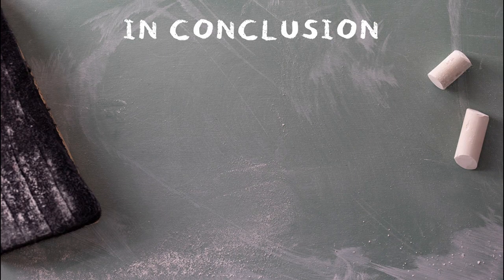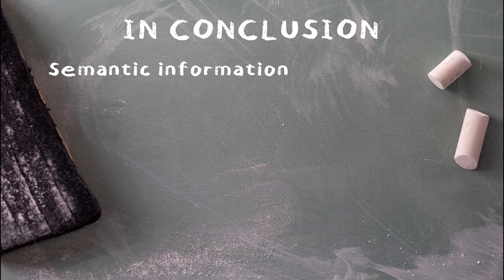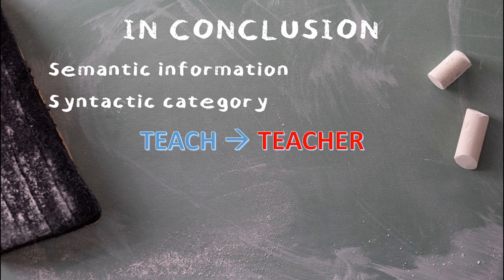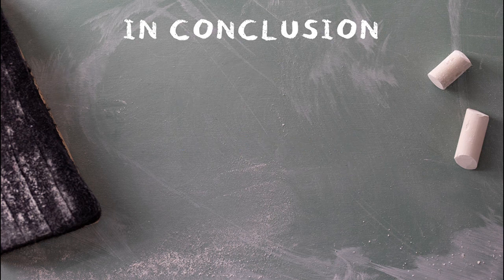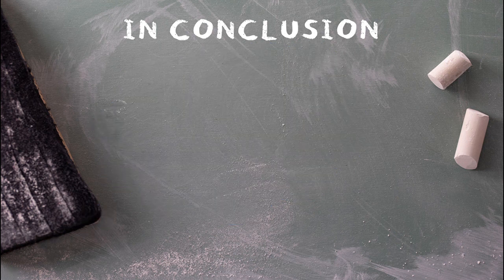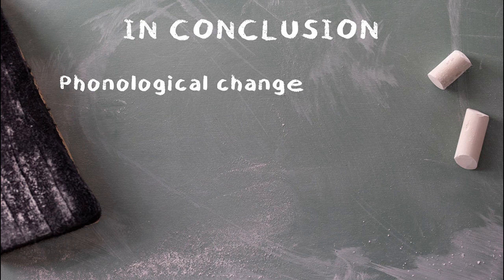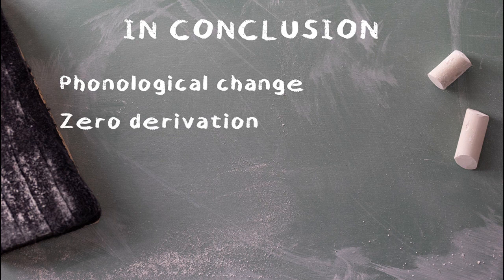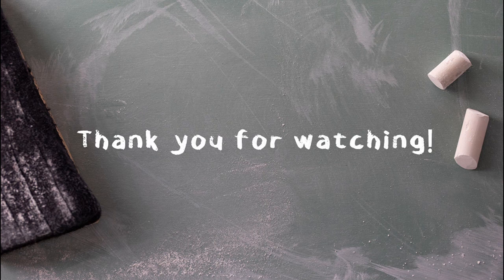In this video, we learned that derivational morphology involves the addition of semantic information and often a change in the syntactic category of the base, resulting in the formation of new lexemes which can include their own inflected forms. We learned that there are constraints on which syntactic category an affix can attach to, and that derivation can lead to phonological change in the root. Sometimes derivation can occur without any overt changes to the root at all, as in zero derivation or affixation. If you have any questions or requests, put them in the comments. If not, thank you for watching — and go listen to Toni Braxton's 'Unbreak My Heart.' You won't regret it.